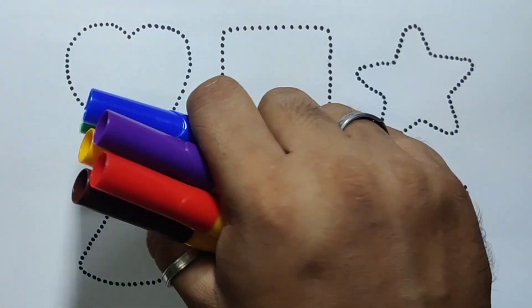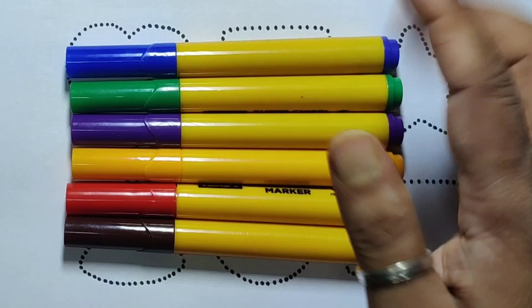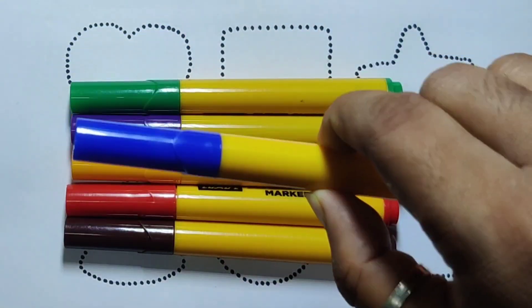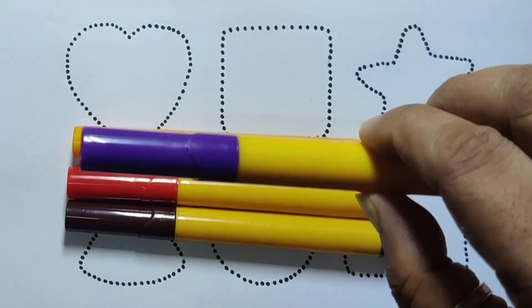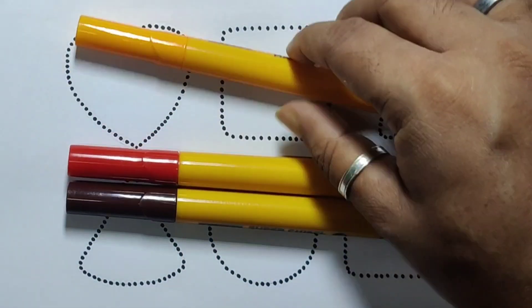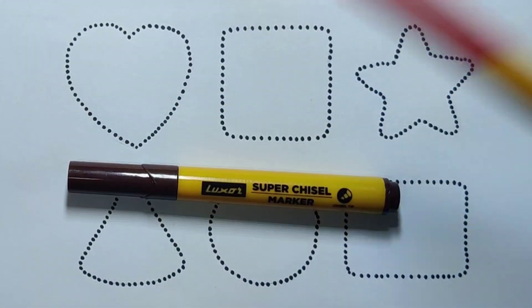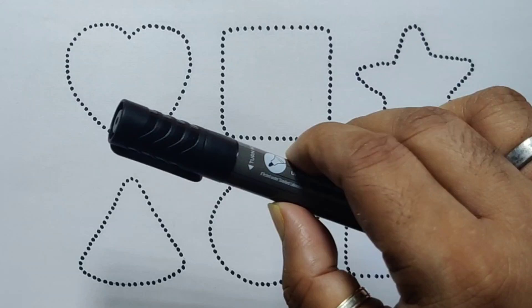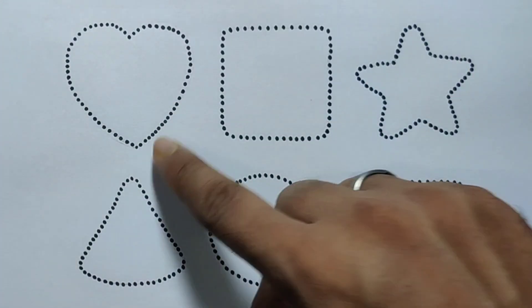Hello kids, welcome to my new video. First you're going to know the color's name: blue color, green color, purple color, orange color, red color, chocolate color, and black color. Now let's learn the 2D shapes: heart, square, star, triangle, circle, and rectangle.